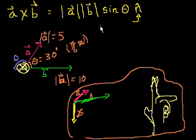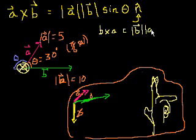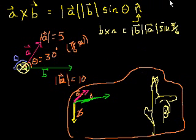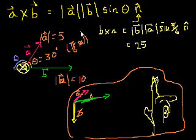We're just switching the order: B cross A. The magnitude is going to be the same, because we're still taking the magnitude of B times the magnitude of A times the sine of the angle between them, which was pi over 6 radians, times some unit vector N. When we multiply scalar quantities, it doesn't matter what order we multiply them in, so this is still going to be 25 times some vector N, which is perpendicular to both A and B.